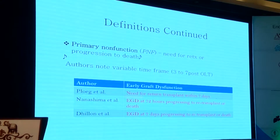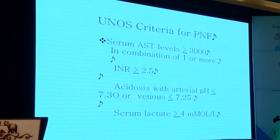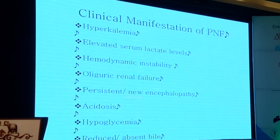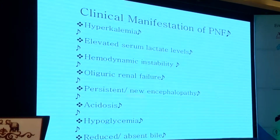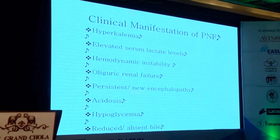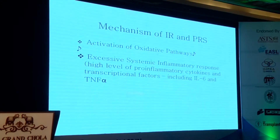The definition of primary nonfunction is made sometime between day three and day seven post-transplant. UNOS has criteria that enable rapid re-transplantation for patients with primary nonfunction — the inclusion criteria are a serum AST greater than 3,000 in combination with one or more of an INR greater than 2.5, acidosis, and elevated serum lactate levels. The clinical manifestations of PNF include hyperkalemia, elevated lactate, hemodynamic instability, oliguric renal failure, persistent encephalopathy, acidosis, and hypoglycemia.